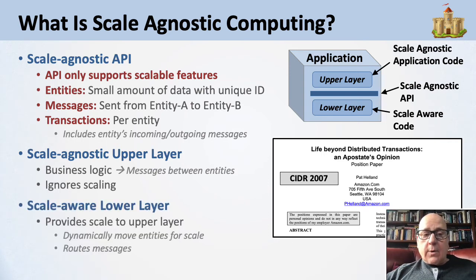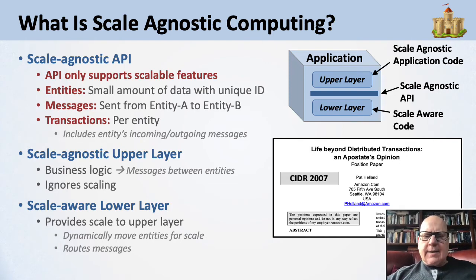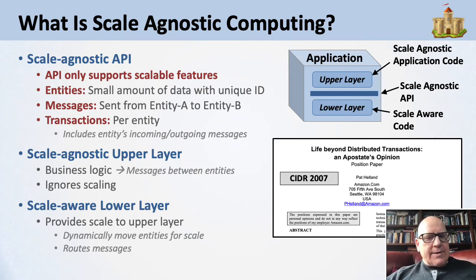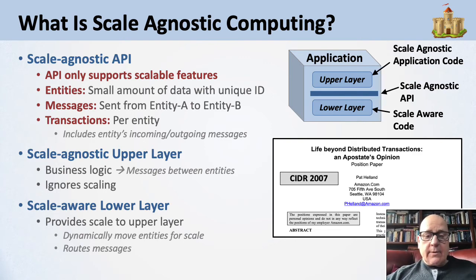The paper introduced a notion of entities — a small amount of data with a unique ID, kilobytes or small megabytes, that can fit on one server and run in one transactional environment. You can have lots and lots of entities and send messages between entity A and entity B — the system guarantees they get delivered and processed. You do a transaction per entity: entity A does a transaction, decides to send a message to entity B, commits that, and the plumbing moves it from A to B. The scale-aware lower layer provides scale for the upper layer without the upper layer knowing it — dynamically moving entities, getting more servers, routing messages to new entity homes.